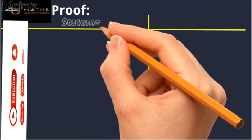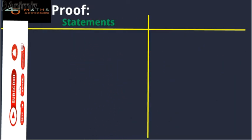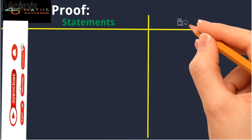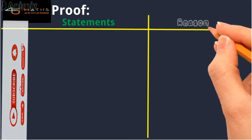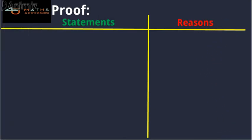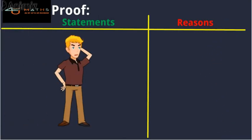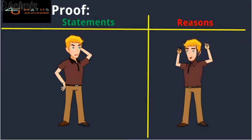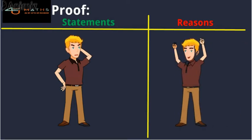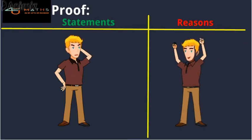The proof has two main portions: Statements and Reasons. In Statements we provide assertions, and in the Reasons we provide solid grounds for those assertions.